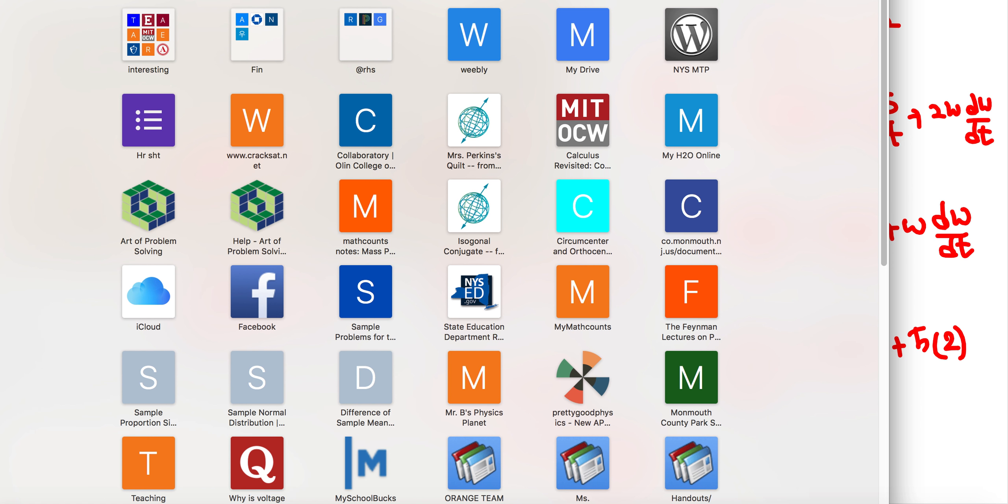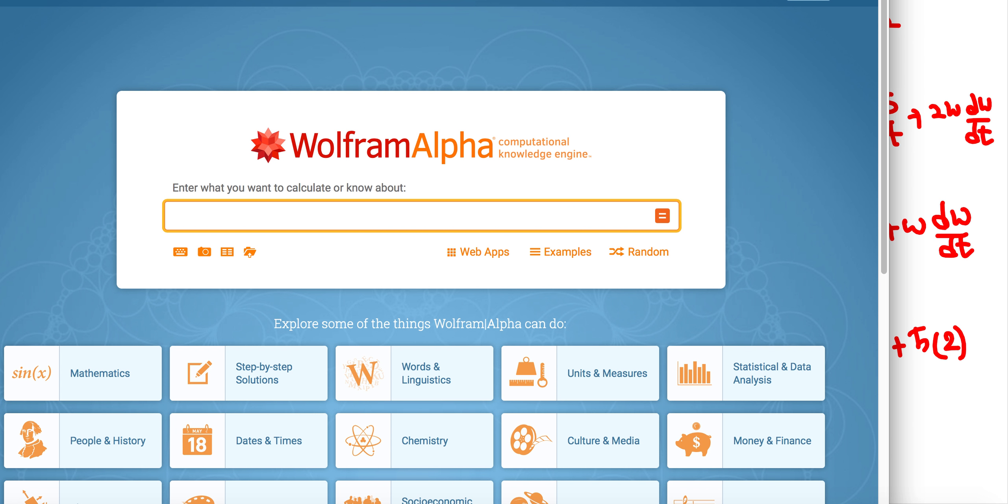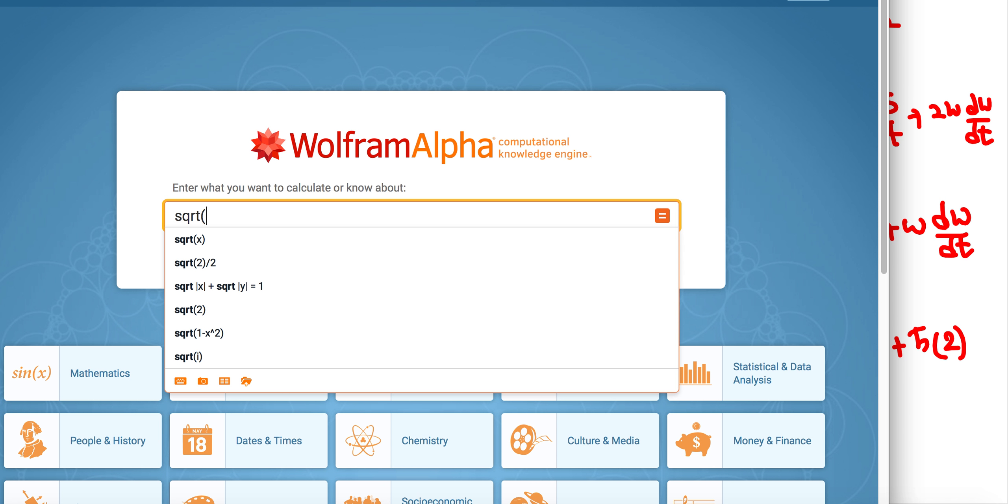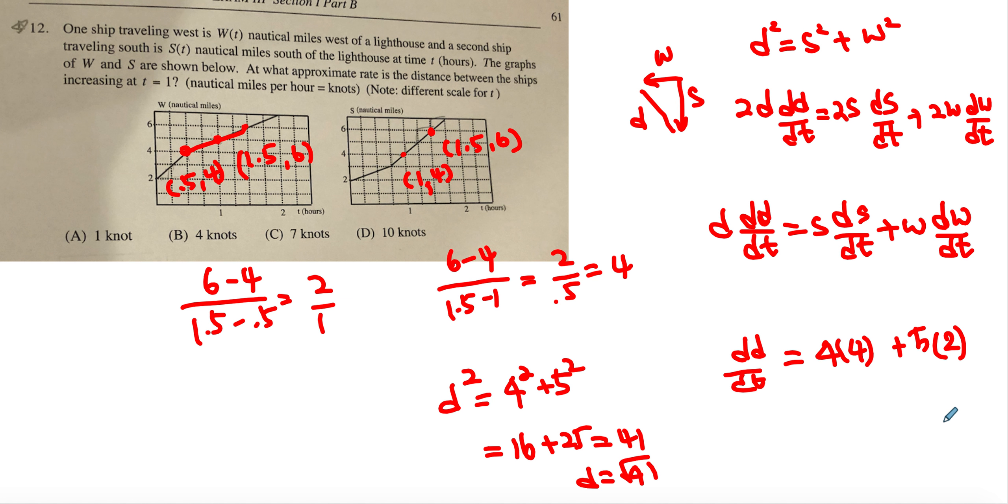If you had to calculate square root of 41 is about 6.4. So I'm going to put that down over here. And we can see that d d dt would have been equal to 16 plus 10 divided by 6.4.